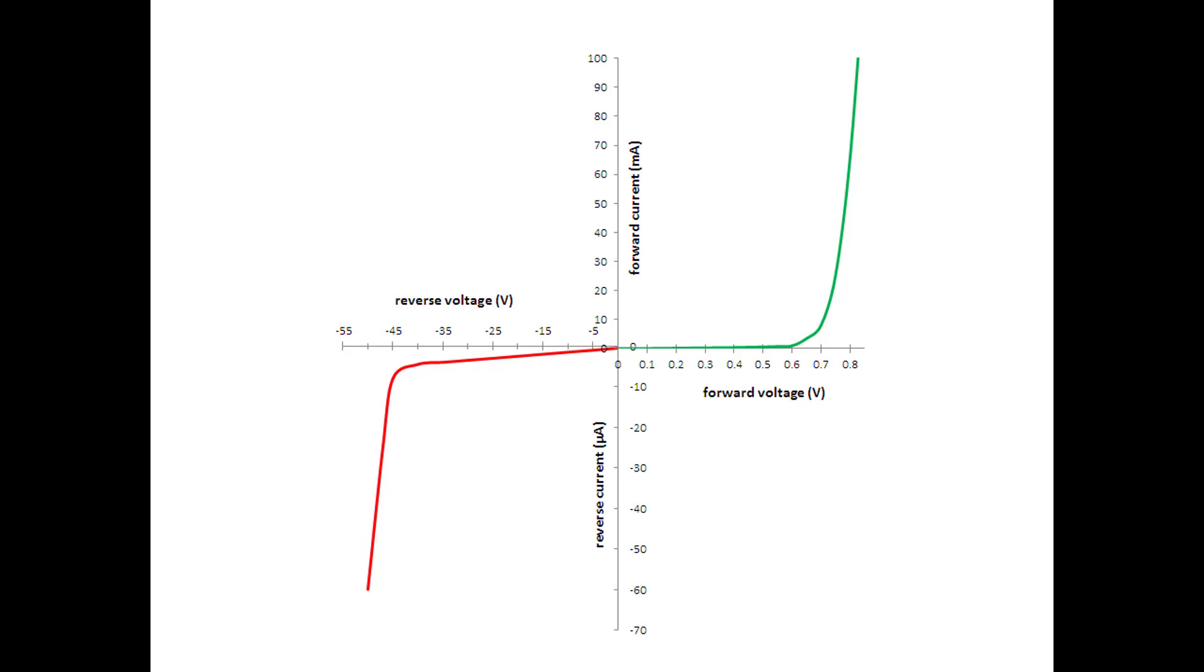This graph shows forward bias voltage versus the forward current, and then the reverse bias voltage and the reverse current. But notice the axes are scaled differently. The forward is measured in volts, showing it at about 0.6, 0.7 volts. The diode starts to conduct quite easily. But in the reverse mode, we can get clear down to 30, 35 volts before it starts to conduct current.